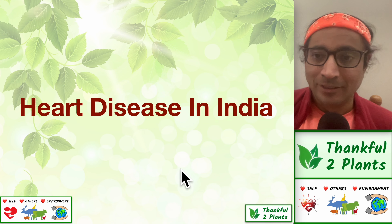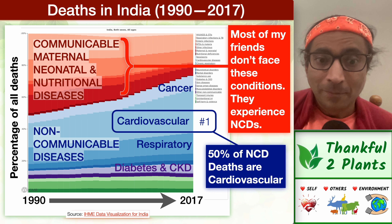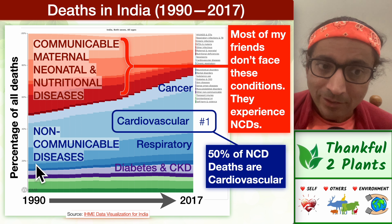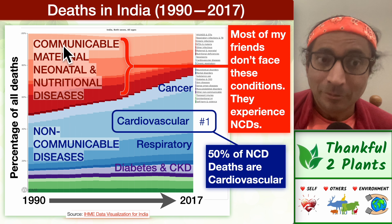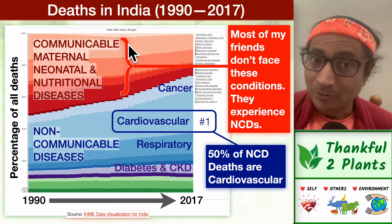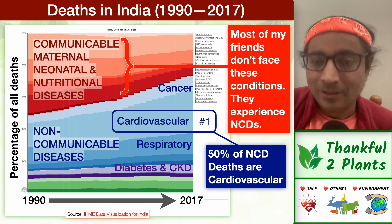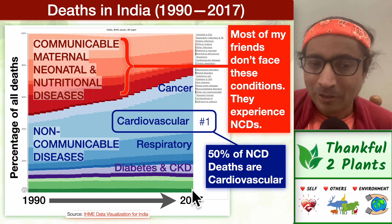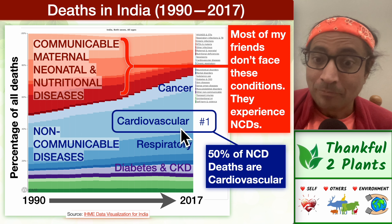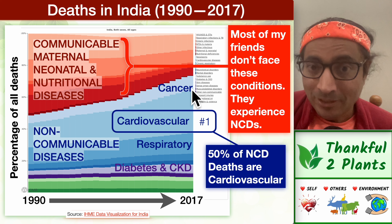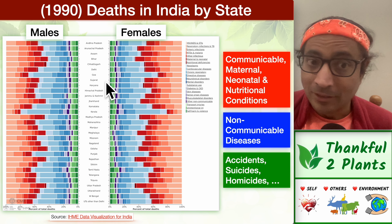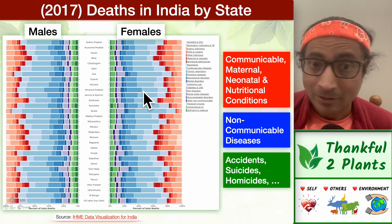Let's study heart disease in India. The big picture is that all across India over a 27-year time frame from 1990 to 2017, the number of people dying due to NCDs is going up. Red-colored deaths — communicable, maternal, neonatal, nutritional — are reducing as India becomes more economically prosperous. Most of us are going to face the blue-colored NCD deaths. Half of these are cardiovascular, and the number of cardiovascular deaths is increasing over this 28-year period as India gets more prosperous.